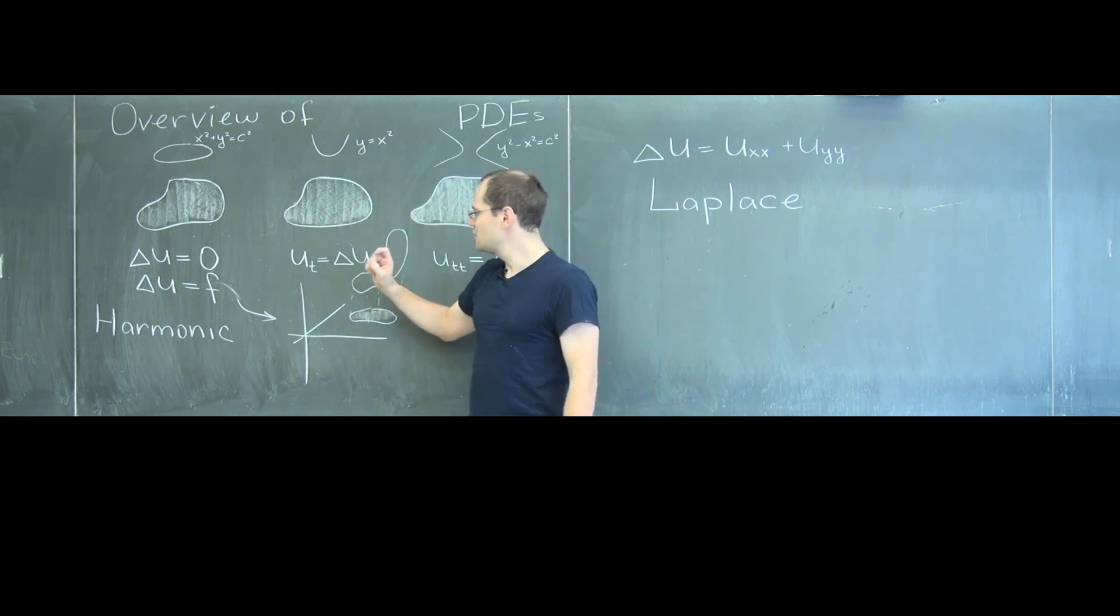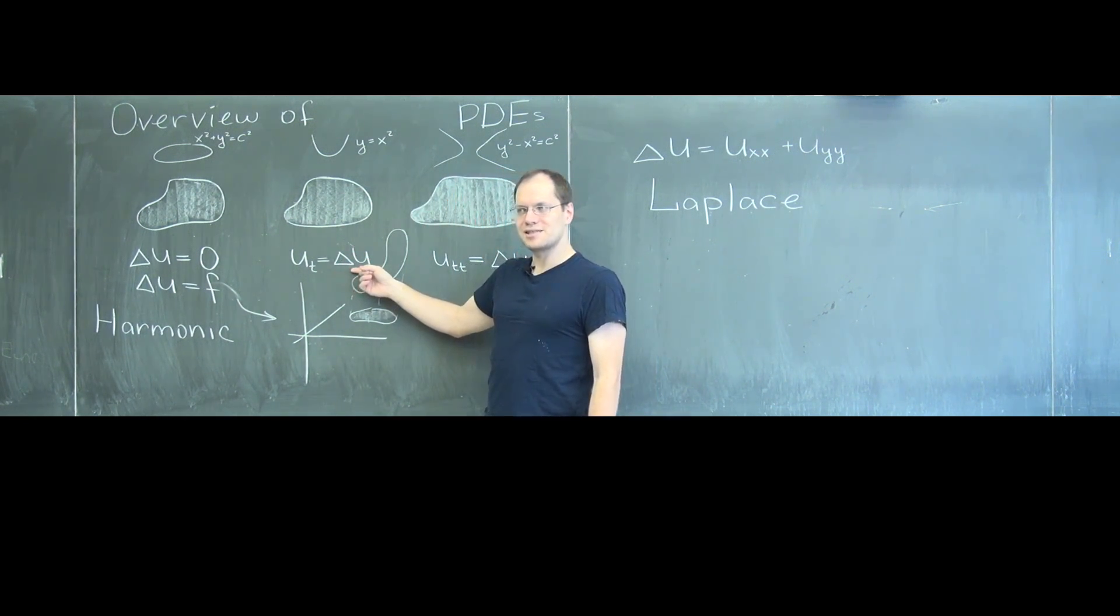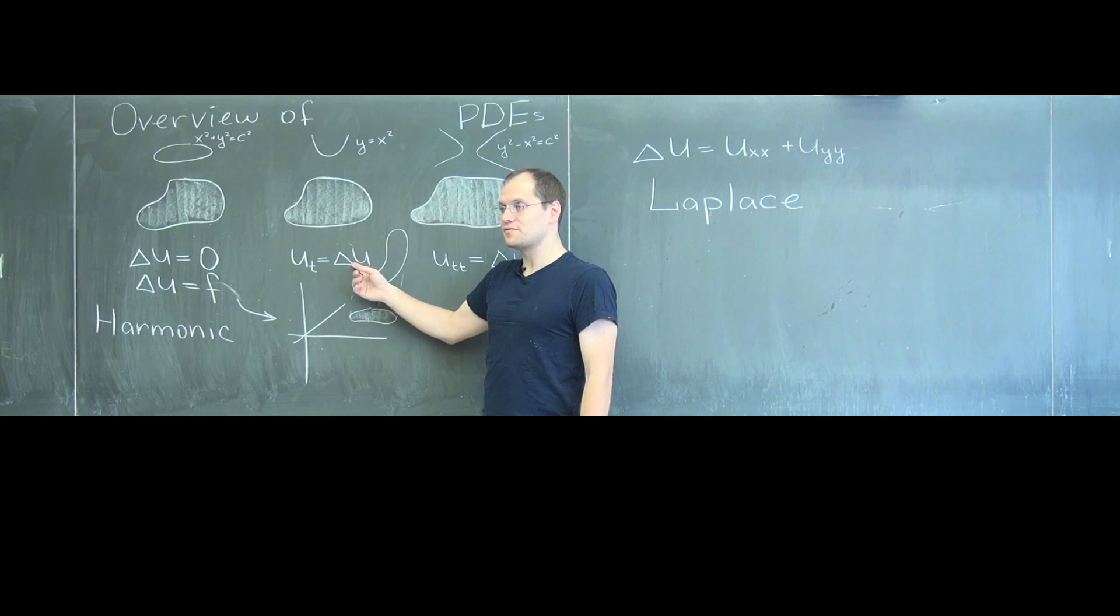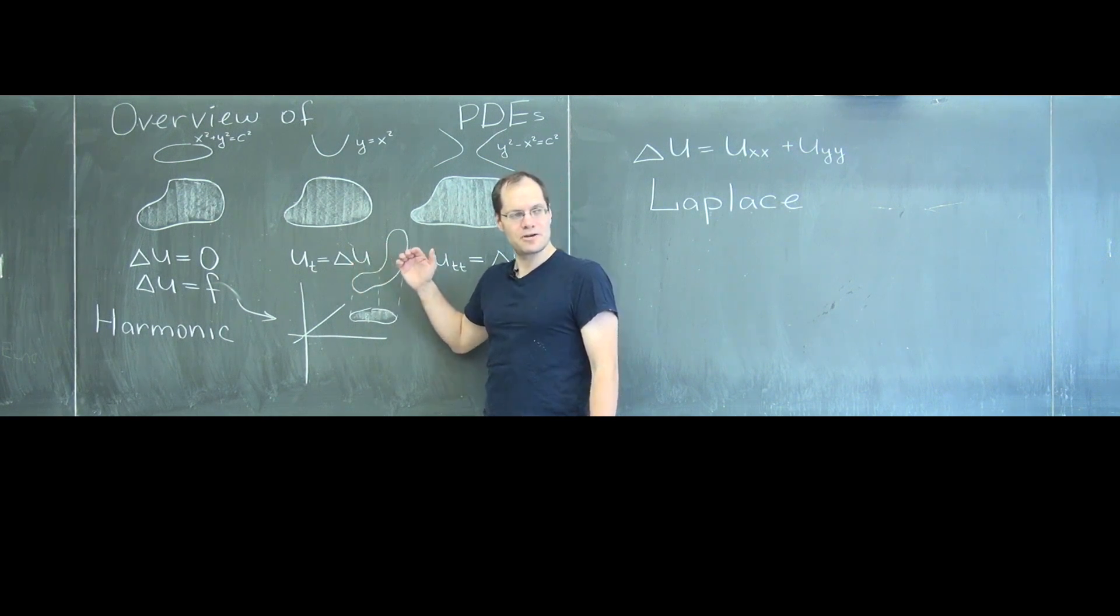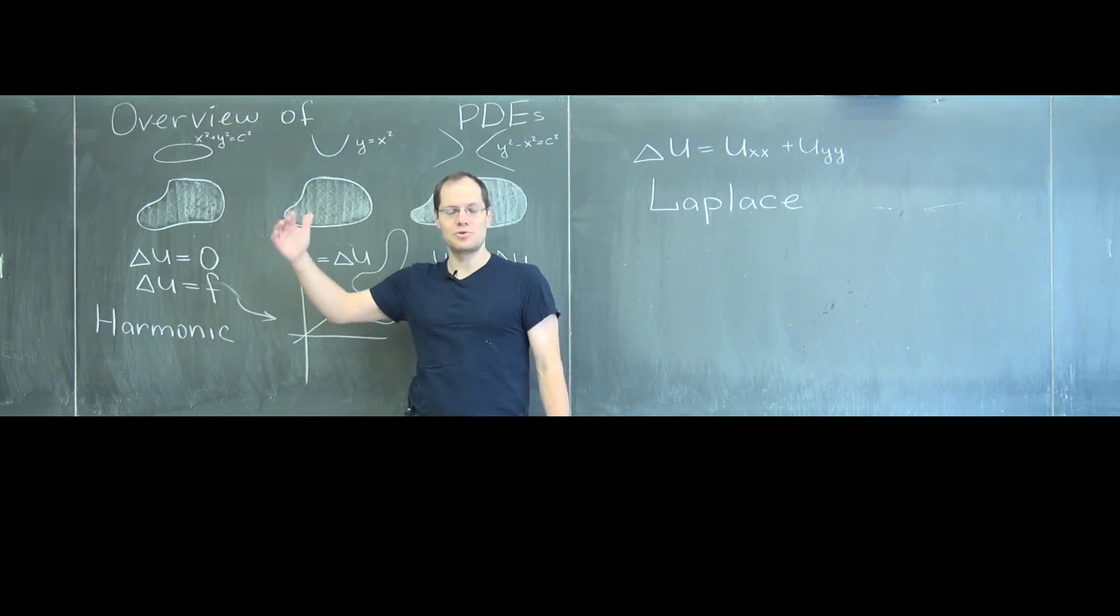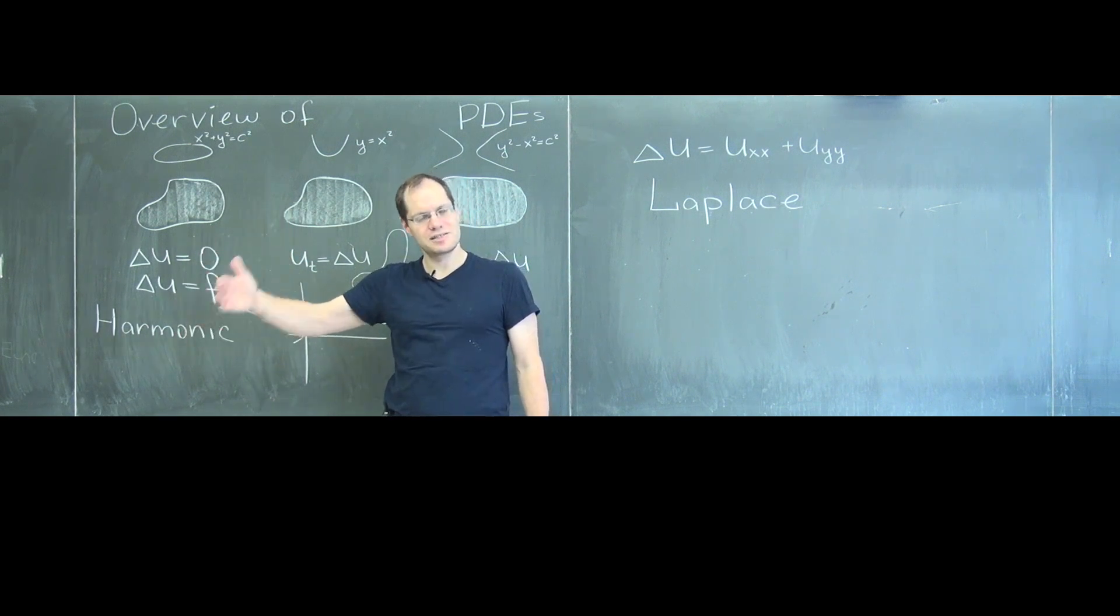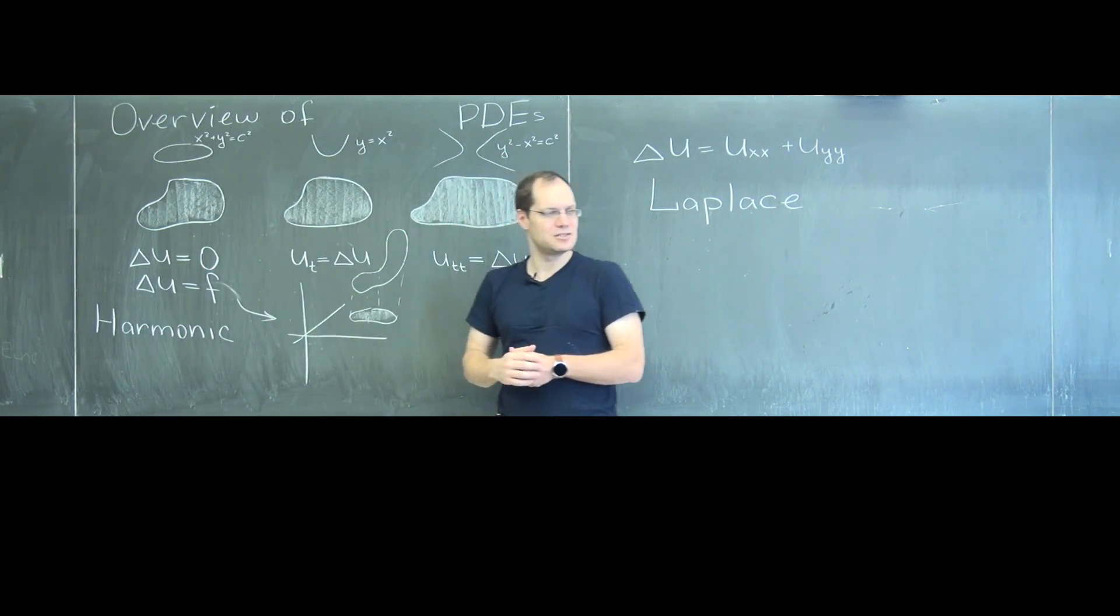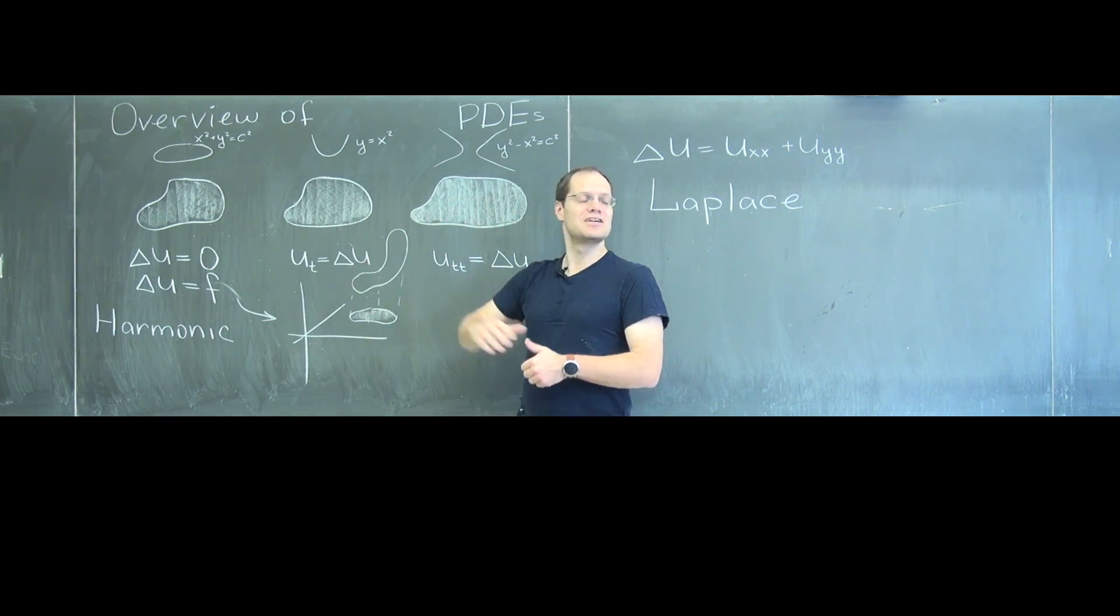And you can kind of see that when the function reaches the point when its Laplacian is zero, evolution stops, right? Because now the equation says time derivative equals zero. So it's all about movement towards the equilibrium where the equilibrium is characterized by the Laplacian equals zero. So that's the heat equation.